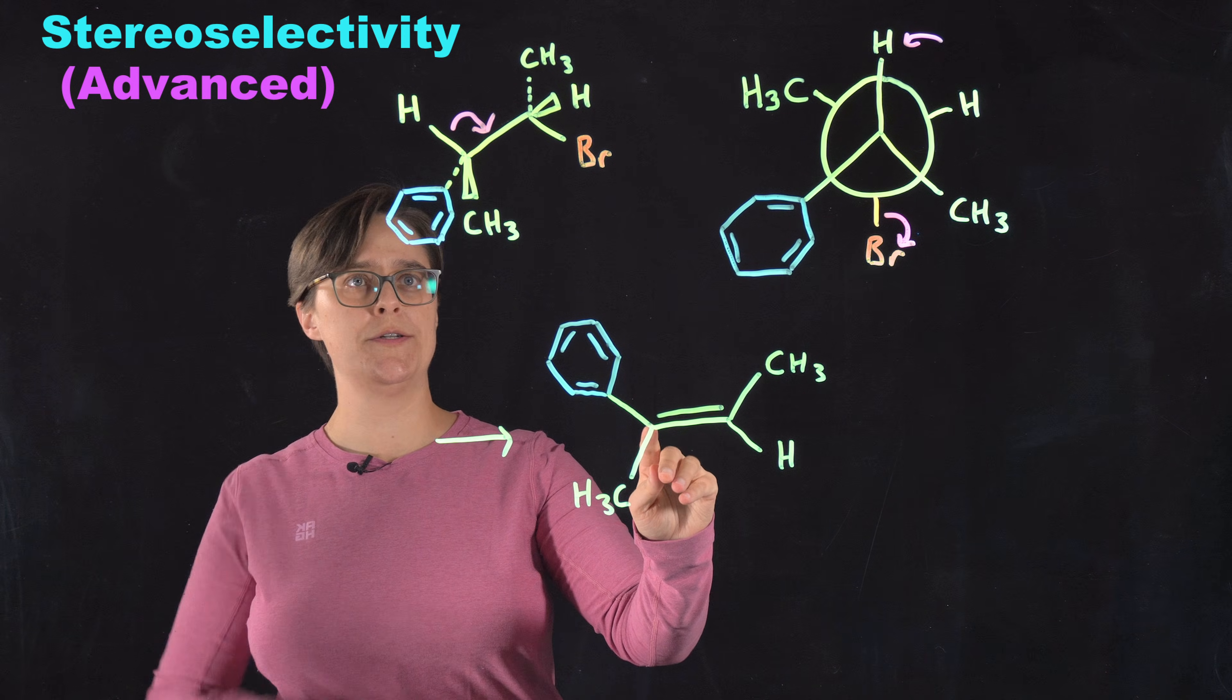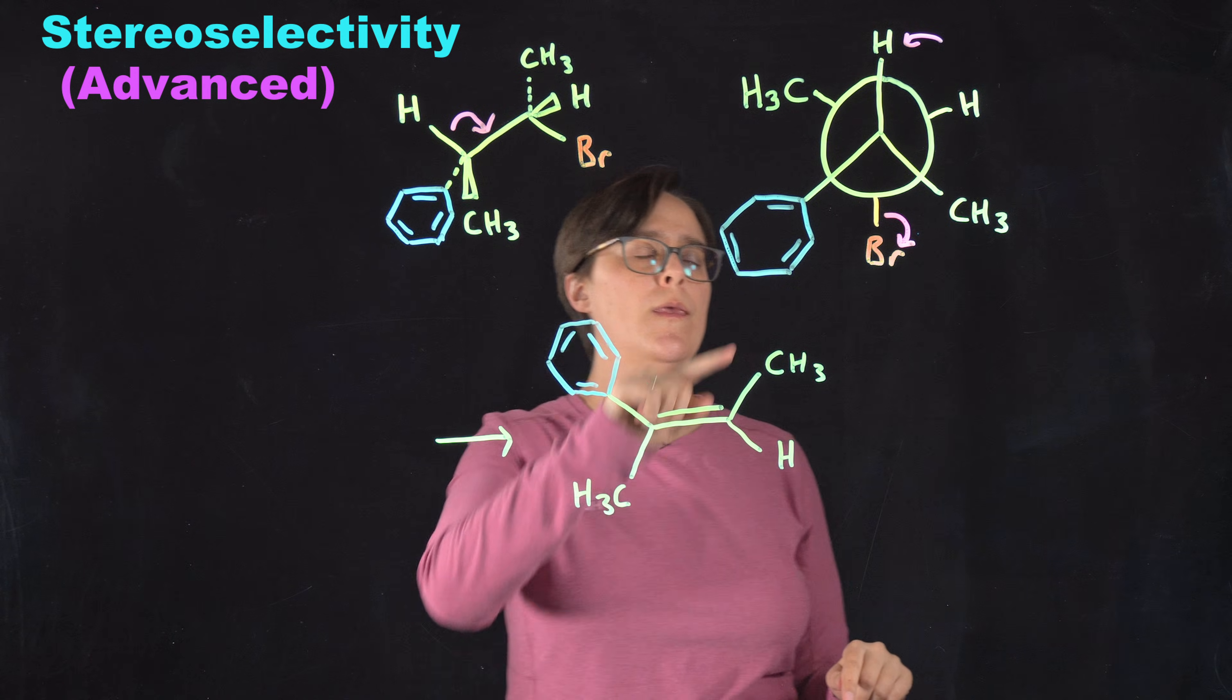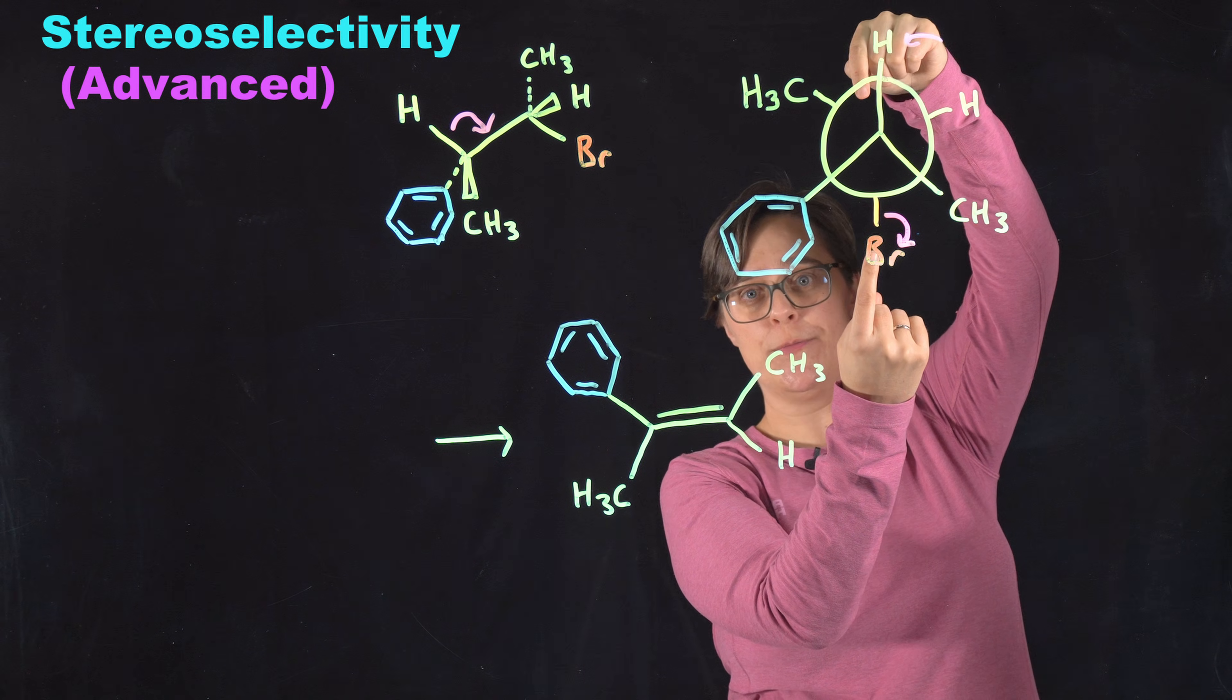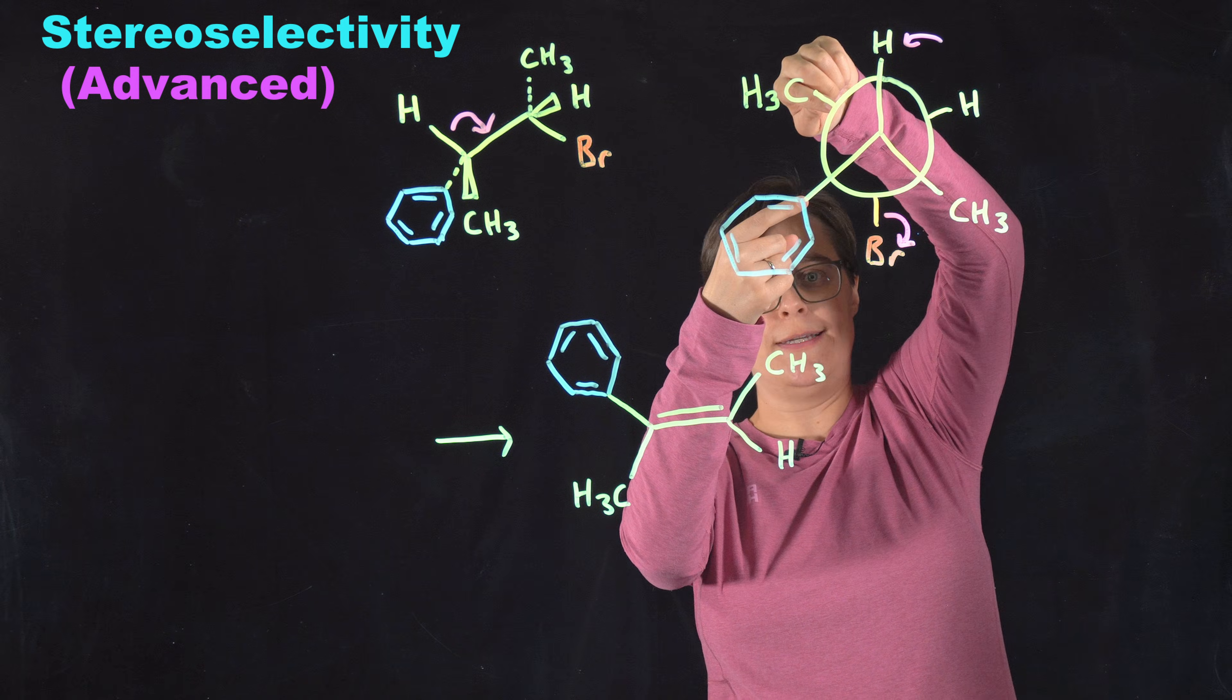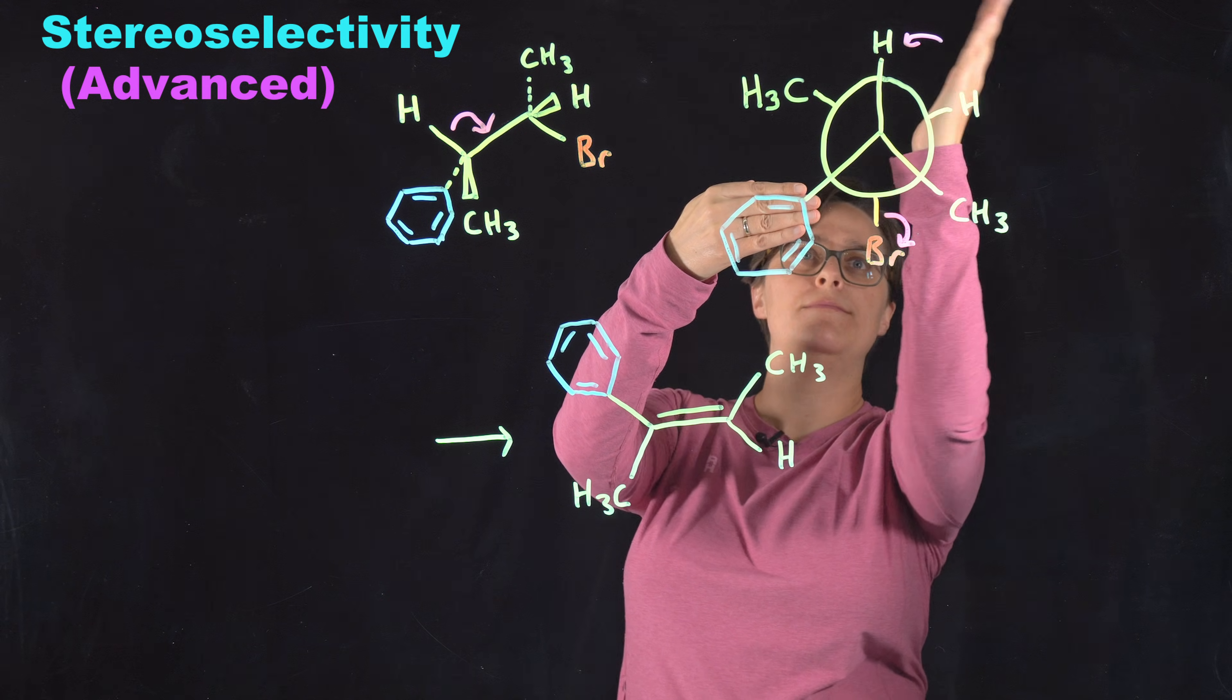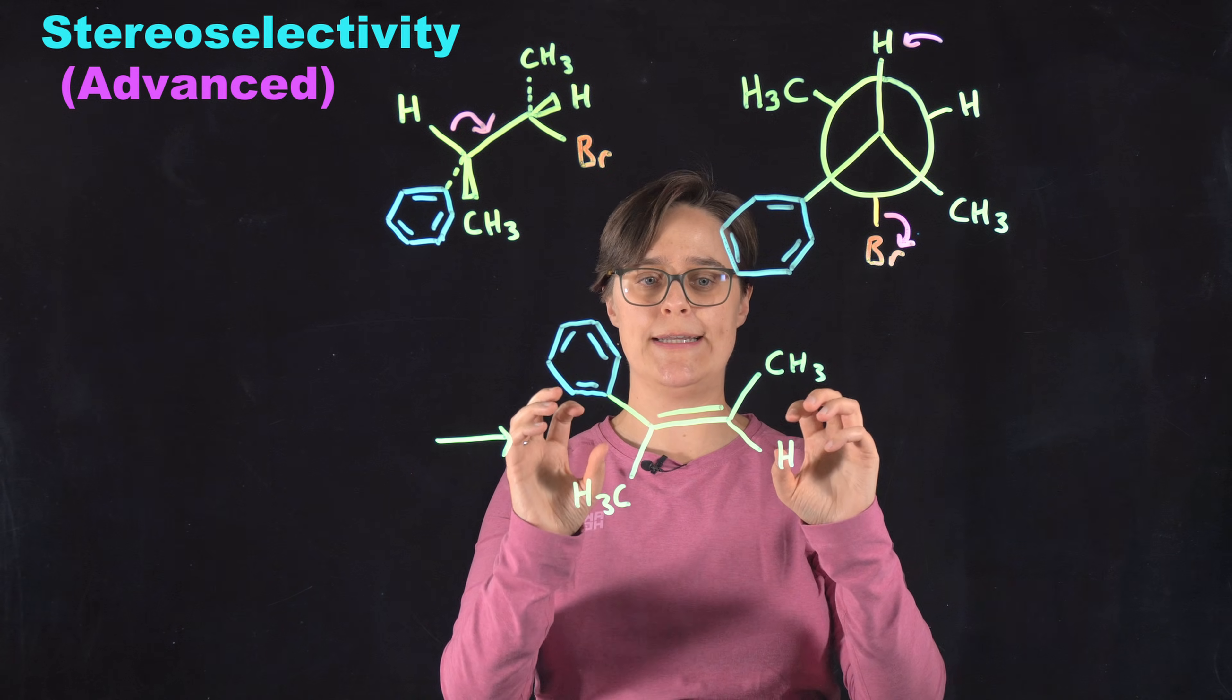So the largest group on this carbon is this phenyl group. The largest group on this carbon is this methyl group. So our front carbon, this is our phenyl group. Our back carbon, this is our methyl group. When these two groups are 180 degrees apart, with this particular stereoisomer, these are only 60 degrees apart. They have to either snap 60 degrees into the same plane, or they have to make a much bigger change so that they are trans from each other. It's going to go with that 60 degree direction.